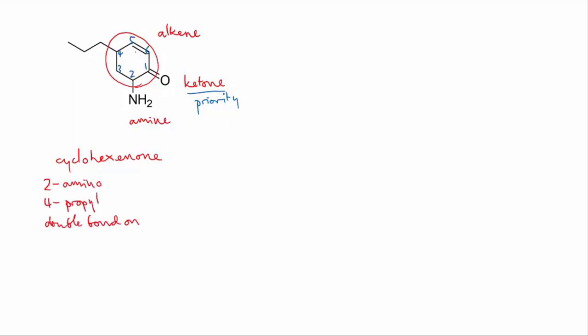So the final name is going to be 2-amino. Remember, the amine group when it's not the priority functional group will be named as a substituent: 2-amino-4-propyl-cyclohex-5-enone. We don't have to specify that the ketone's on carbon number one since it is the priority functional group and it's in a ring, so it has to be number one.